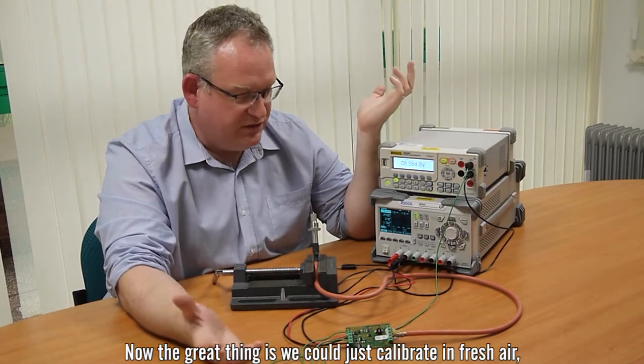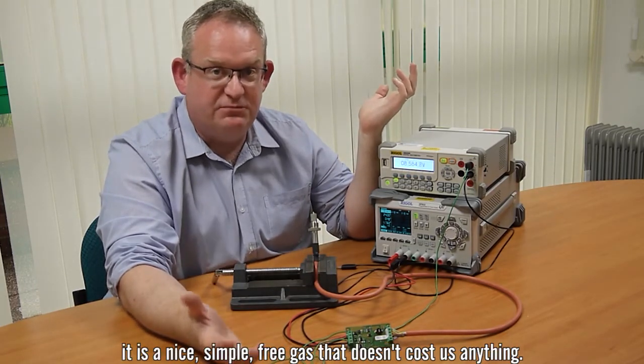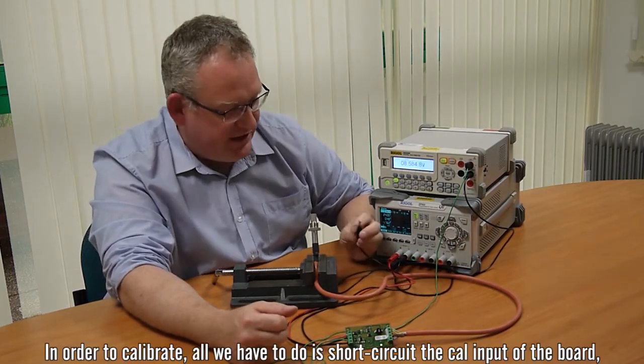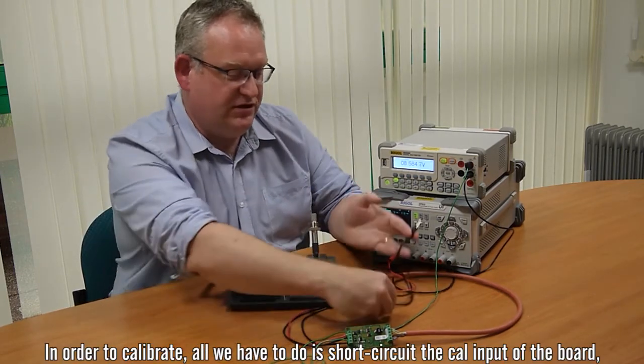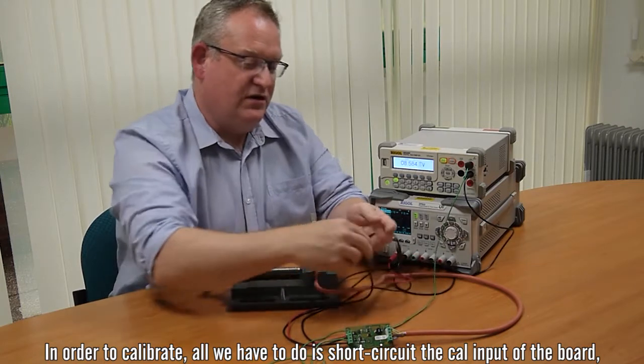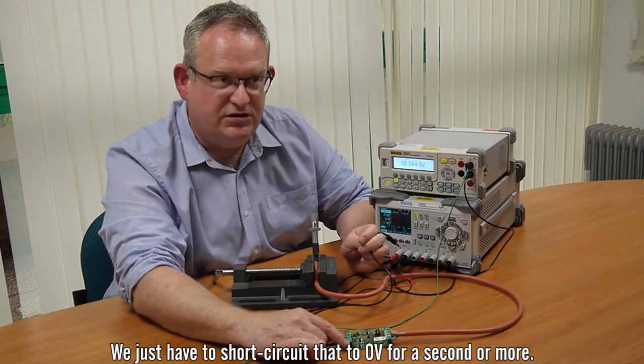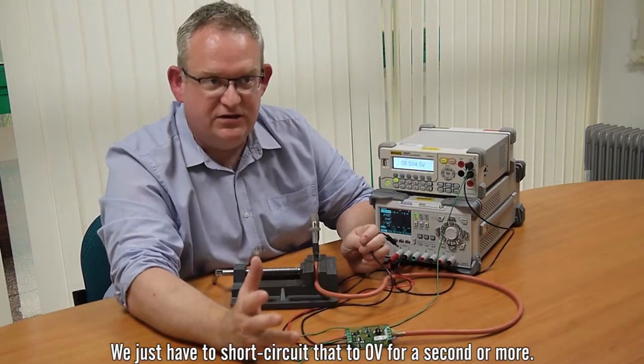So every sensor is a bit different so we have to calibrate it in an environment to make sure it's accurate. Now the great thing is we can just calibrate in fresh air, it's a nice simple free gas that doesn't cost us anything and in order to calibrate all we have to do is short circuit the cal input of the board, which is this one here on the end.